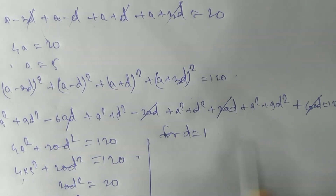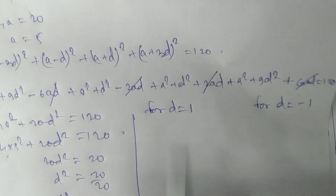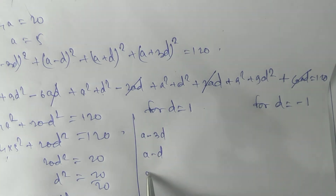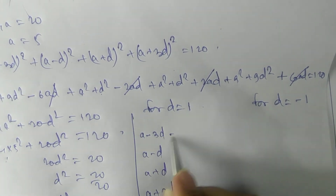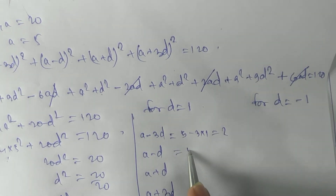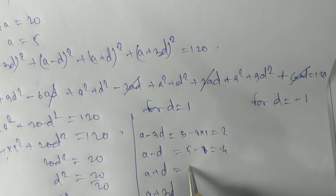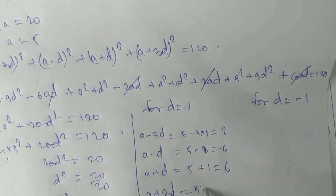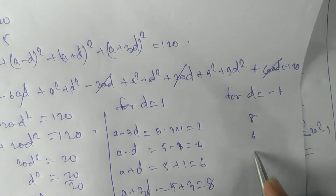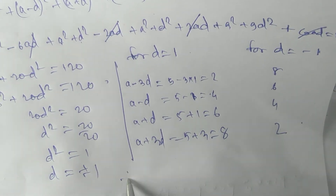For d = +1 (and similarly d = −1 gives the same set in reverse order): the four numbers are a−3d = 2, a−d = 4, a+d = 6, a+3d = 8. For d = −1 we get 8, 6, 4, 2 — the same numbers, so both cases give the same result.